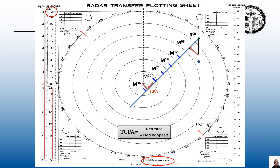To find the true speed of the contact, exactly like we found relative speed: measure the distance between E and M using your dividers or compass and take it to the 12-mile scale. It looks like this is going to be about 1.7 miles long, so the true speed of this contact is 17 knots. The relative speed was 23 knots, but the contact's true speed is 17 knots.